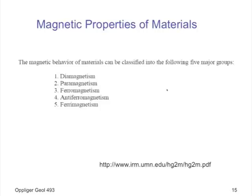Now we have to talk about magnetic properties of materials, minerals, and rocks. Materials in general can be classified into five groups of magnetic behavior: diamagnetism, paramagnetism, ferromagnetism, anti-ferromagnetism, and ferrimagnetism.